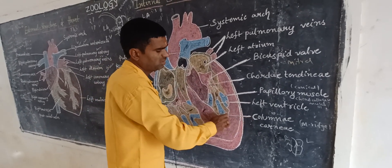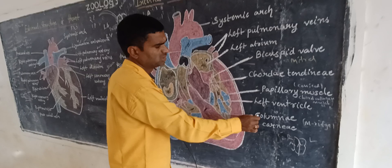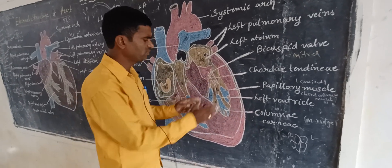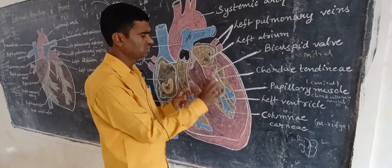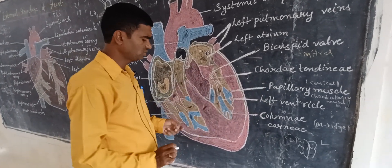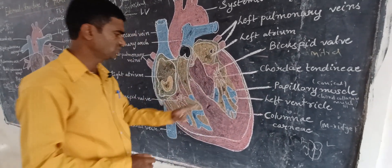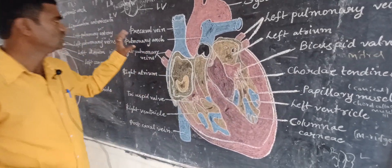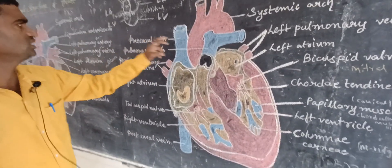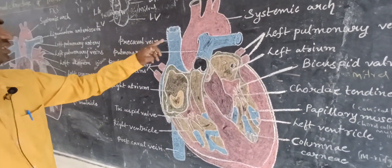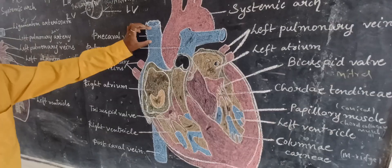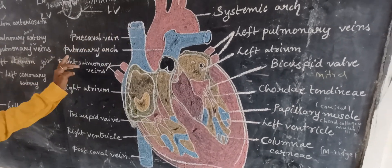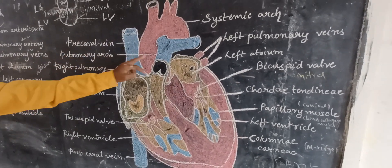Columnae carneae are forming — these are the muscular ridges. Likewise the ventricles are forming in the internal structure of the heart. The precaval veins are receiving deoxygenated blood, and the pulmonary arch is forming.